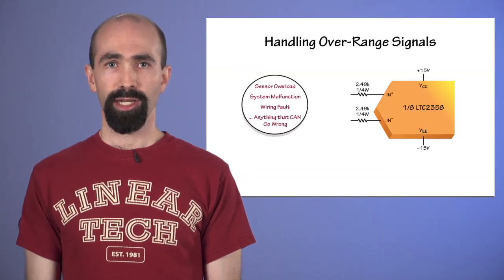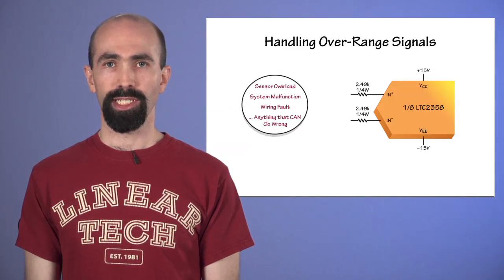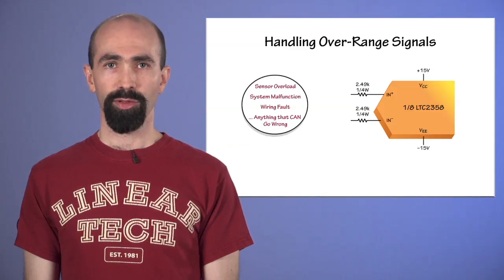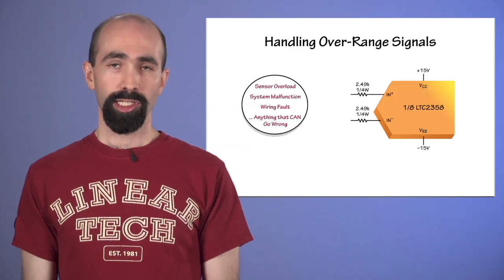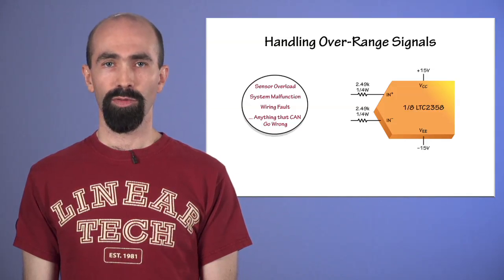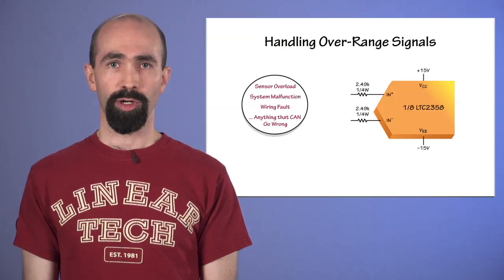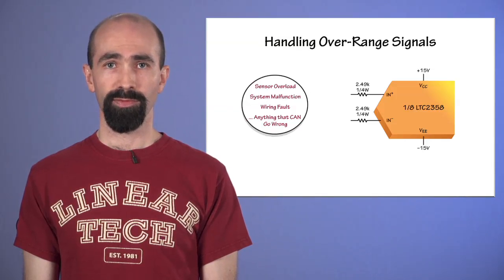That simple example shows how easy it can be to interface between a sensor and the LTC-2358, but the buffers help in other ways as well. Changing focus a bit, the buffered inputs also make it easy to design a system to handle overrange signals cleanly and transparently, whether they arise as part of normal behavior or a system fault condition.